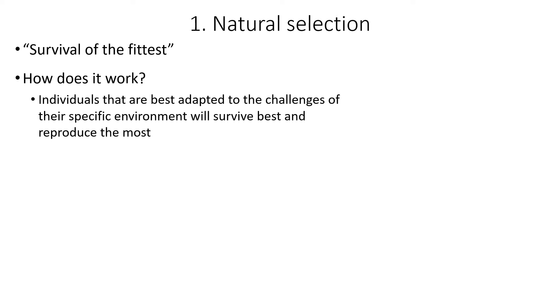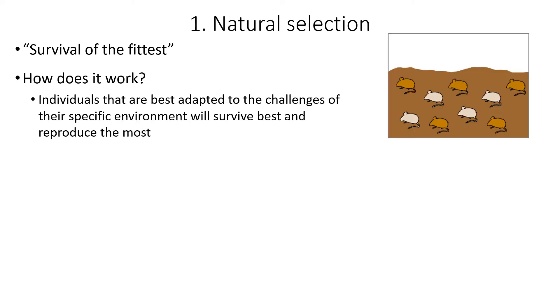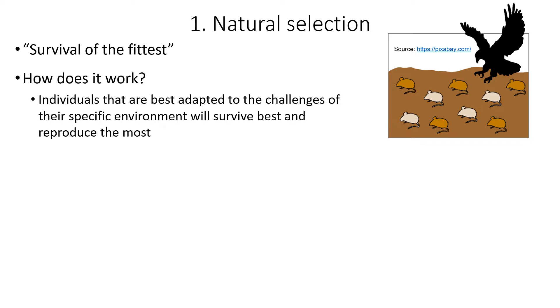The first microevolutionary process is natural selection, also known as survival of the fittest. Individuals who are best adapted to the challenges of their specific natural environment will survive best and reproduce the most. Here we have a population of mice with variation between individuals. The specific challenge these mice face is a hawk — a visual predator catching and killing the mice it can see most easily. The white mice are more visible to the hawk, so they're more likely to get caught and killed. But the brown mice camouflage better, so they're more likely to survive and reproduce, passing on the alleles that code for that brown coat color.